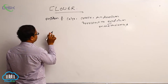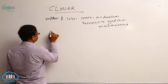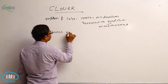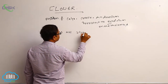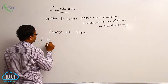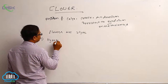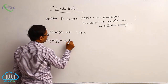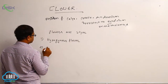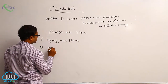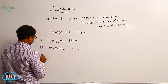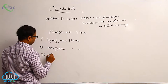So basically, based on this character — the position of these floral parts — flowers are of three types. First one is hypogynous flower. Second one is perigynous flower. Third one is epigynous flower.